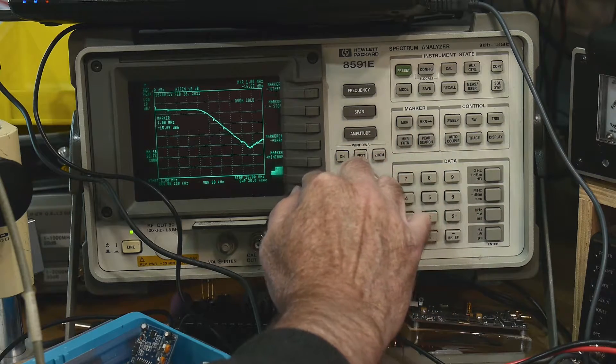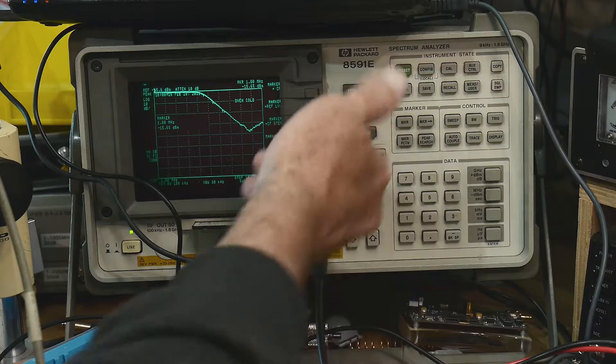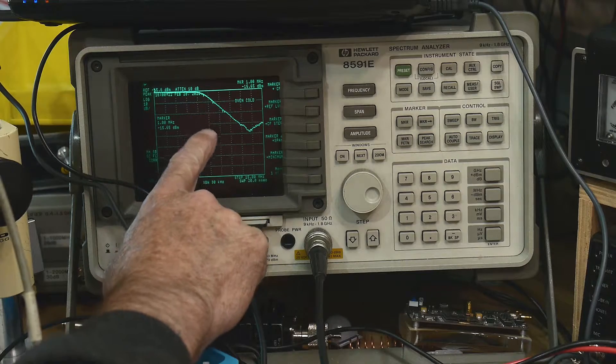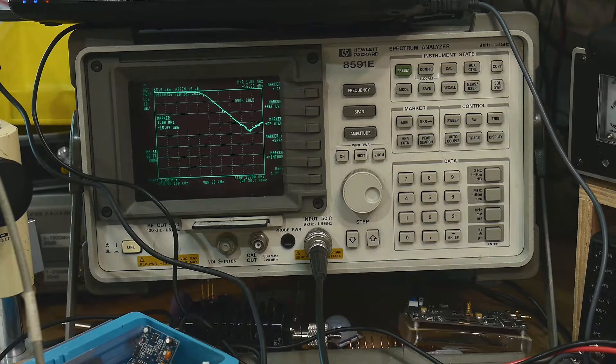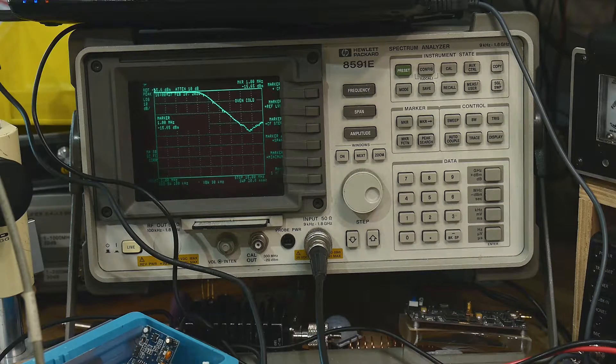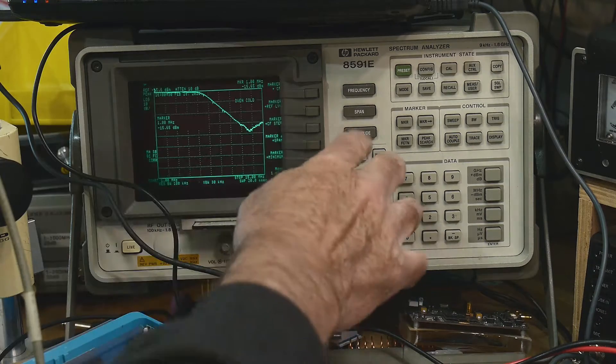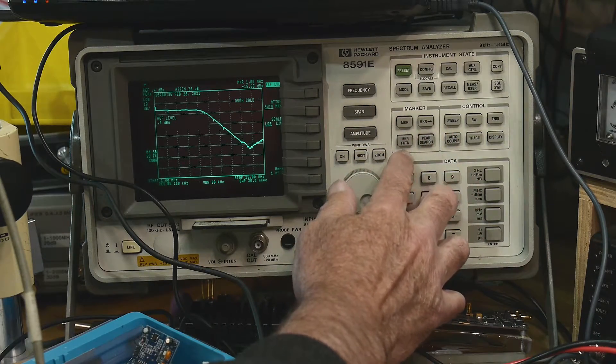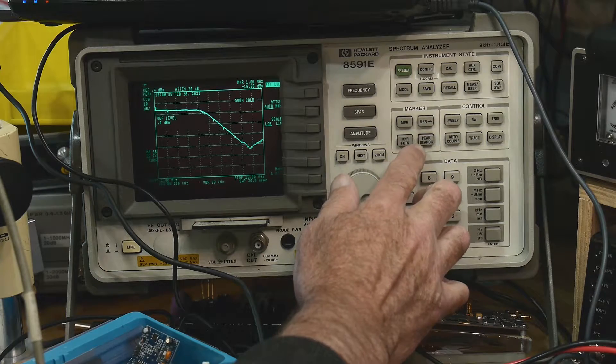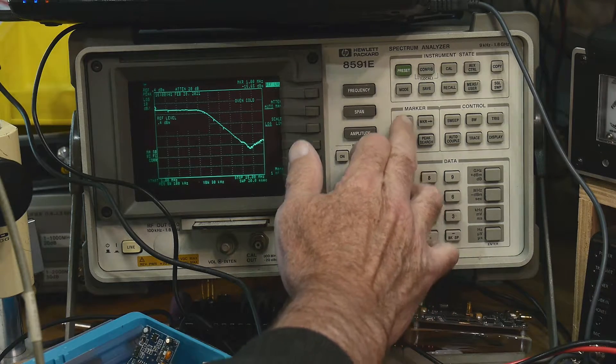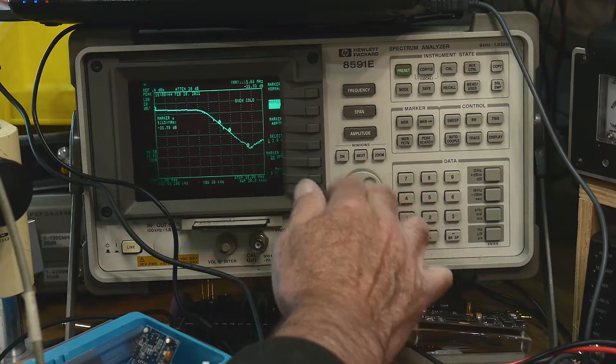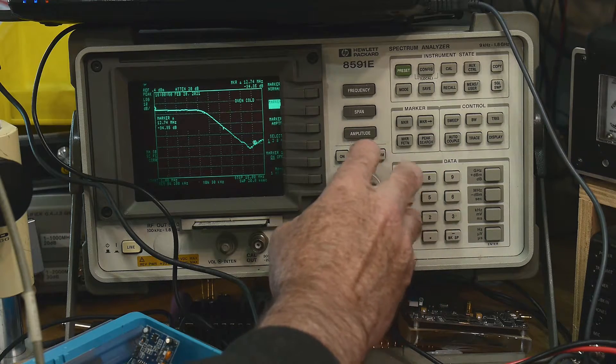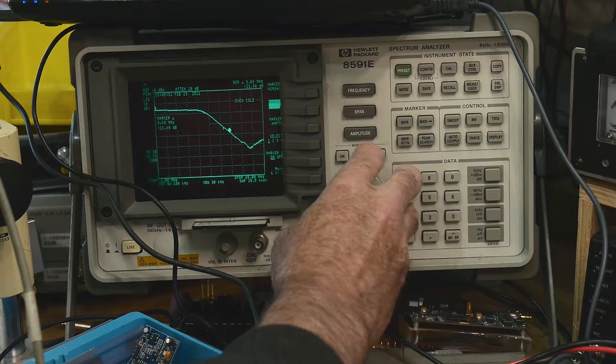You bring the marker up here up to the top. And then you say marker to reference level. And it takes that marker and pushes it up to the top. And now you can just read off like 10, 20, 30. You can just look at it visually and see how far down it is instead of having to think too hard. Anyway, that's one way of doing it. And the other way to do it is these delta markers. So that little dip right down there is minus 38 dB.